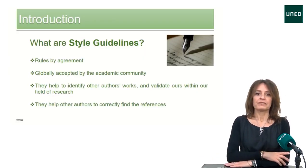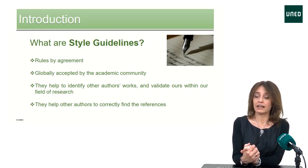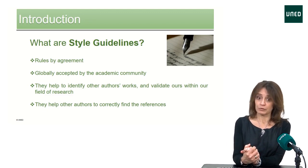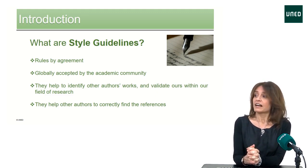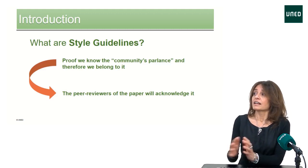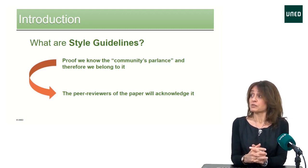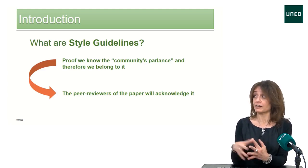First of all, what are style guidelines? They are rules made by agreement, globally accepted by the academic community. The style guidelines help to identify other authors' works and validate ours within our field of research, and they help other authors to correctly find their references as well. The style guidelines prove that we know the community's parlance and therefore we belong to it, and so the peer reviewers of the paper we are writing will acknowledge it.